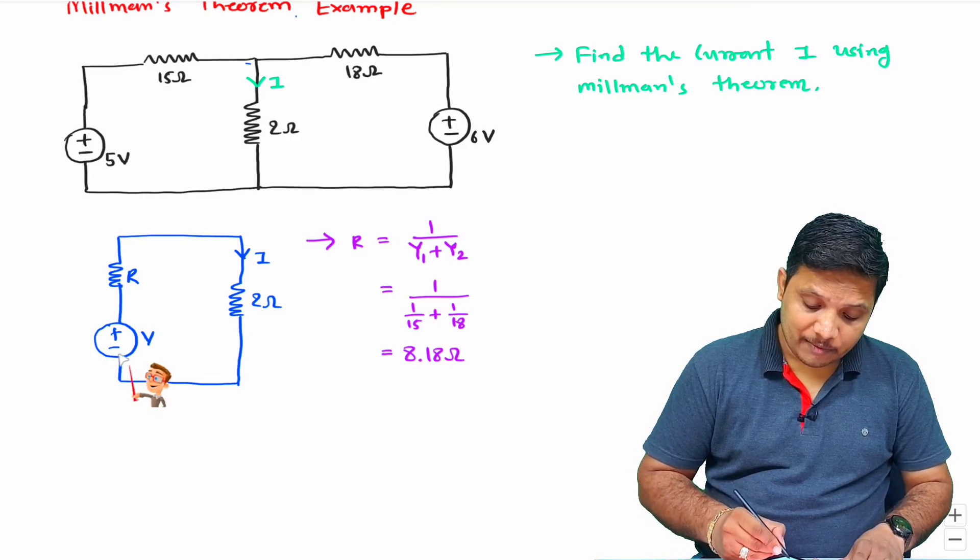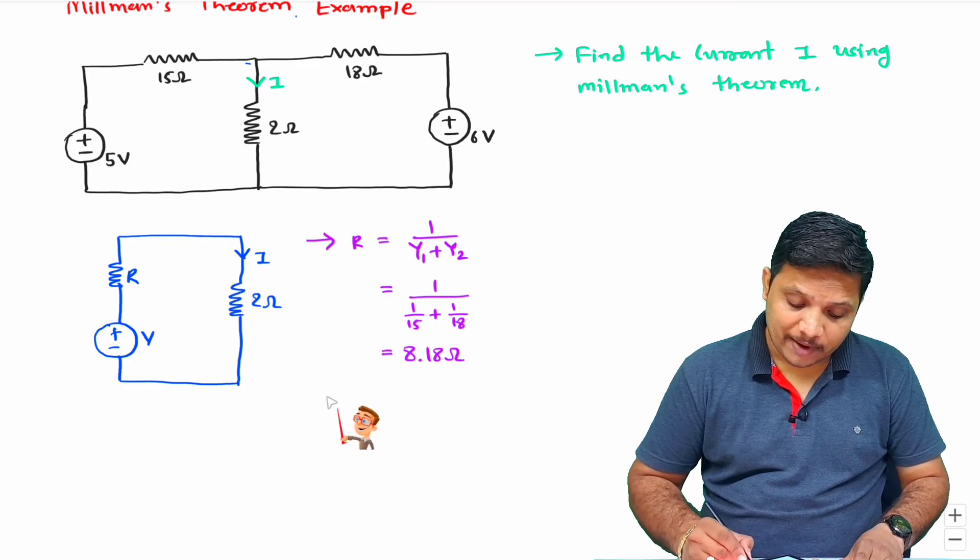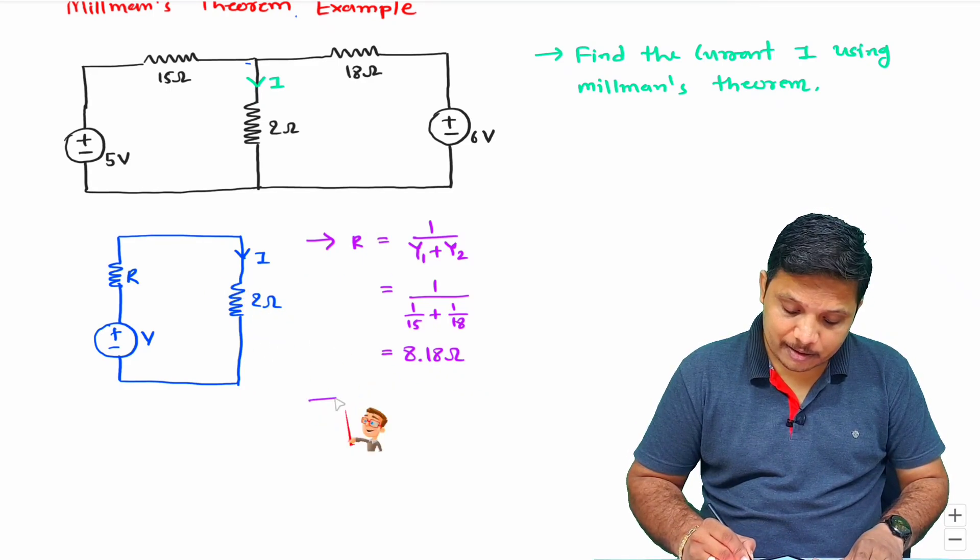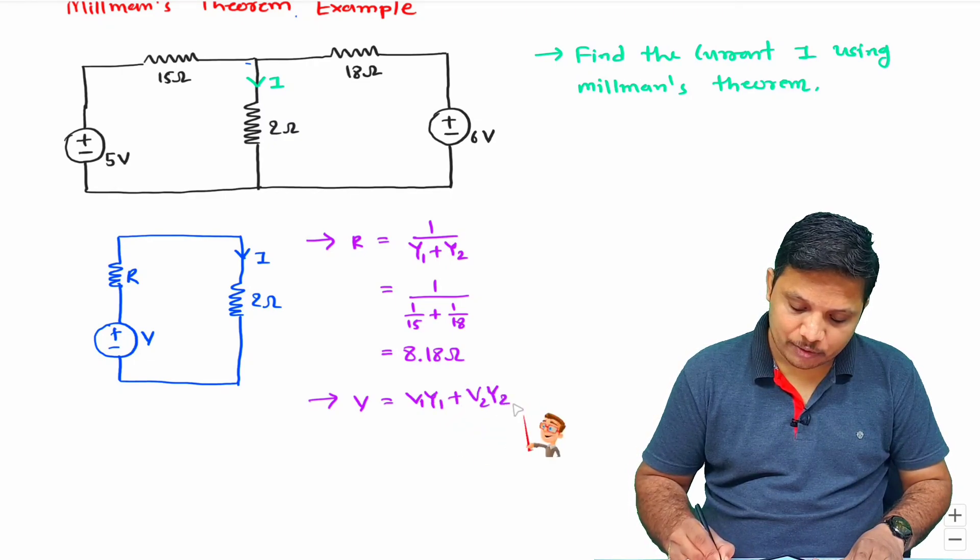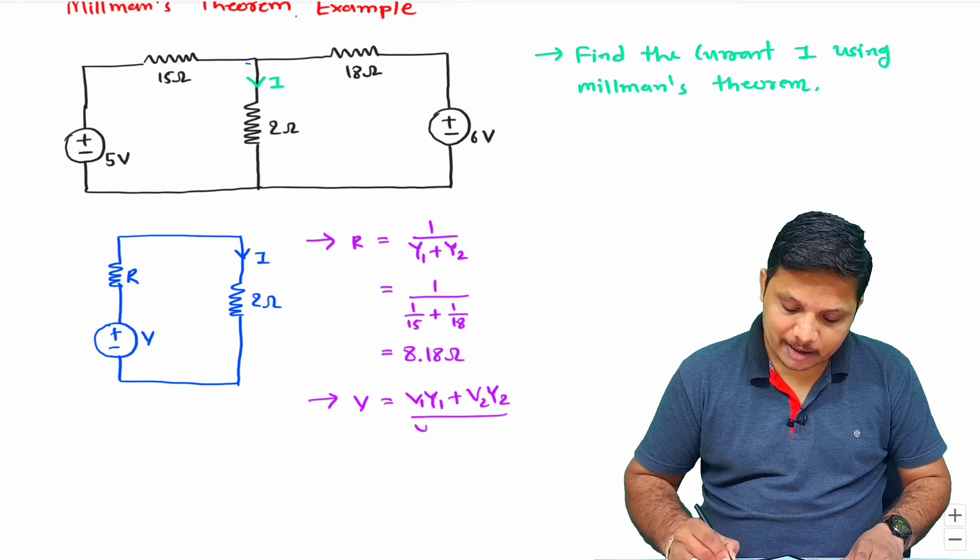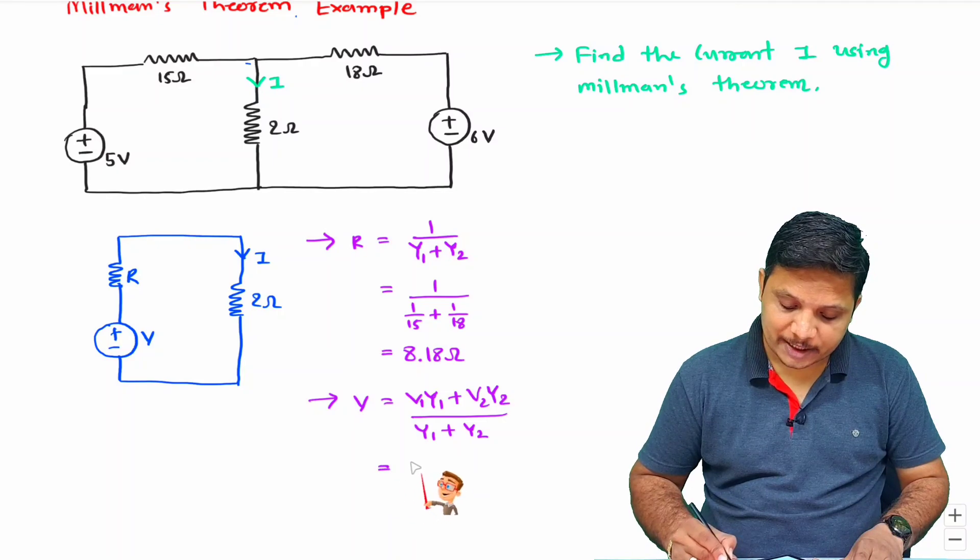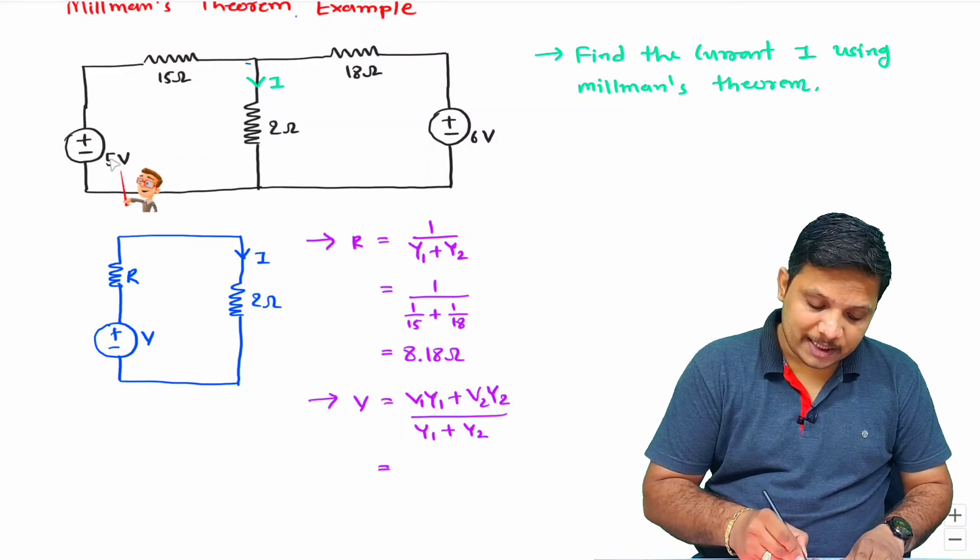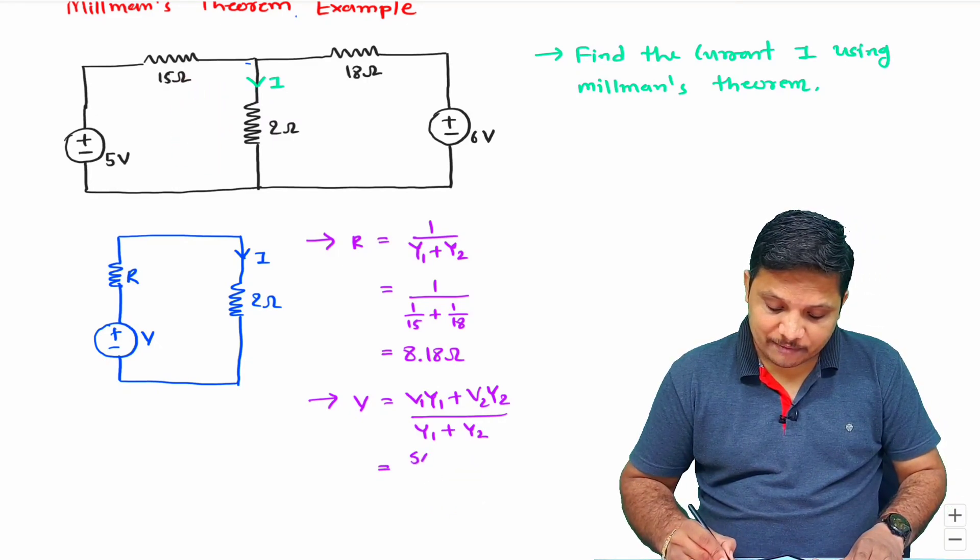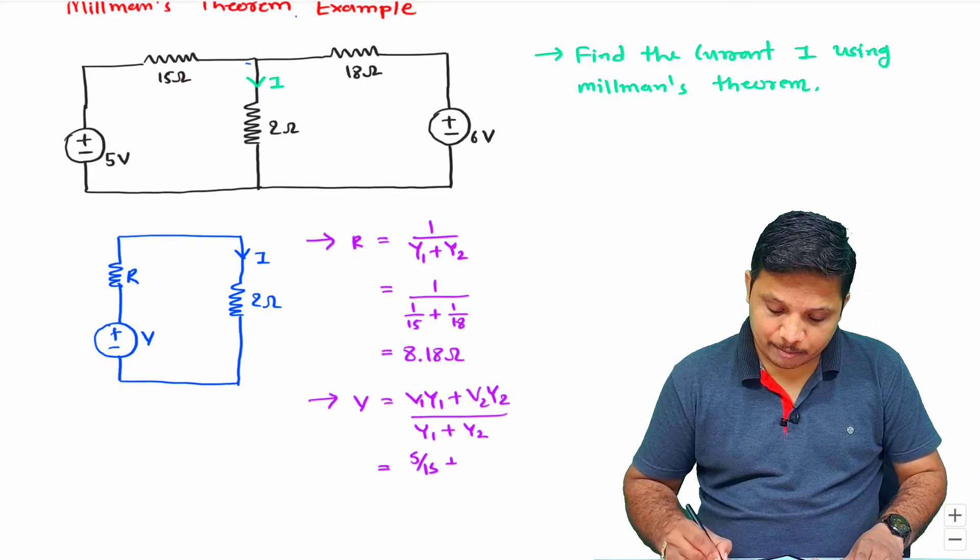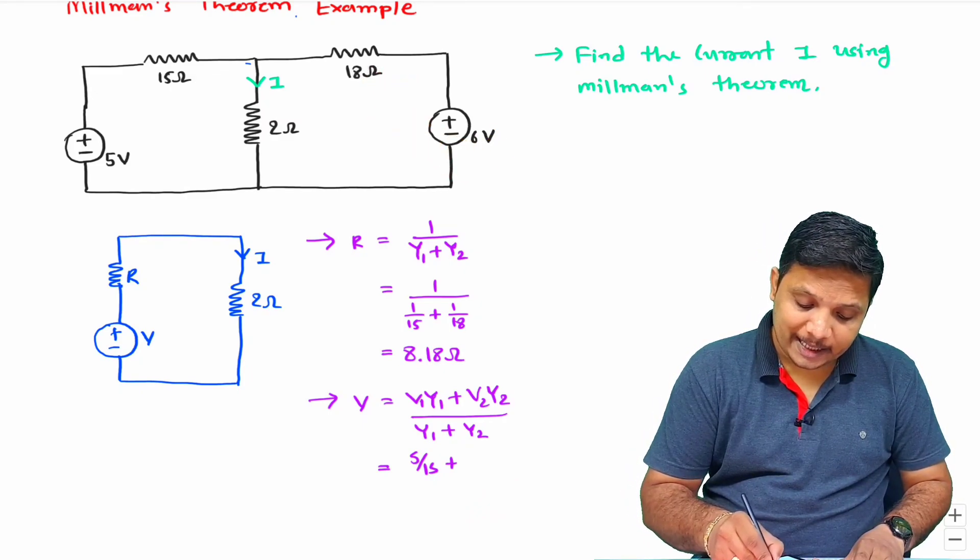Now similarly, we can have value of V. As per Millman's theorem, value of V will be V1Y1 plus V2Y2 divided by Y1 plus Y2. Let us substitute the values. V1 is 5 voltage and Y1 is 1 by 15, so this will be 5 by 15 plus V2 is 6 voltage and Y2 is 1 by 18.